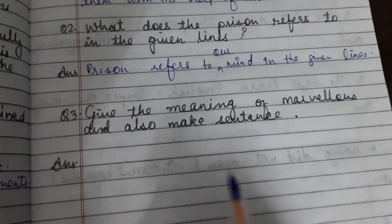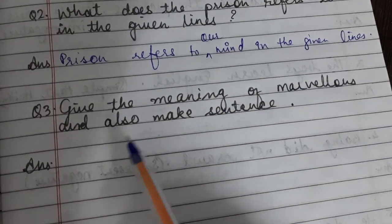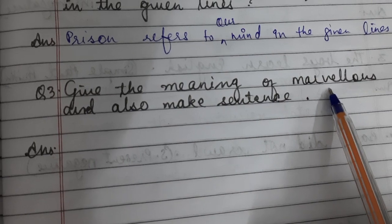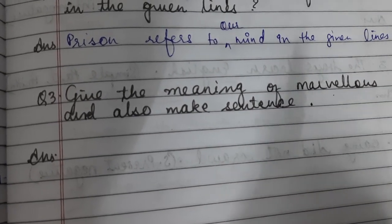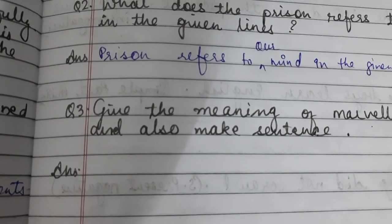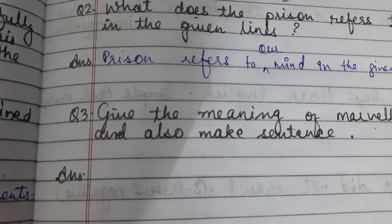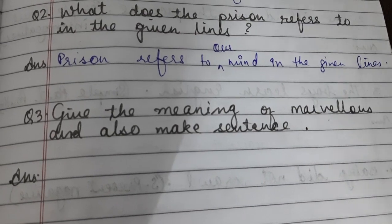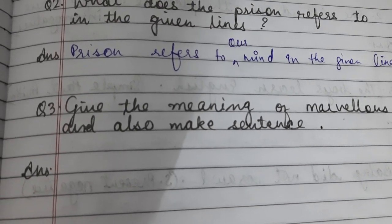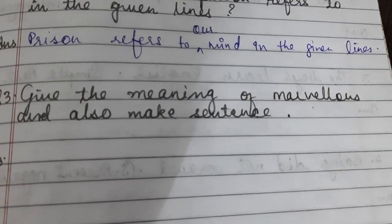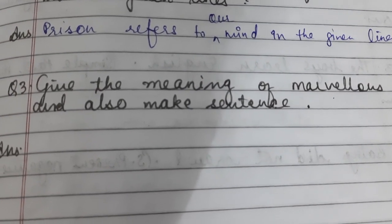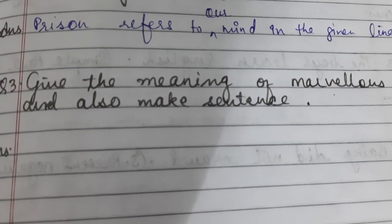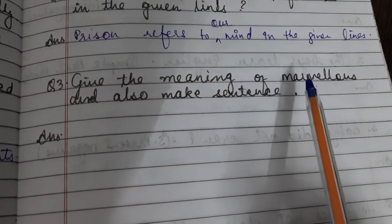Question three: Give the meaning of 'marvelous' and make a sentence. Marvelous means wonderful, amazing, or excellent. Even if this is a word you are hearing for the first time, once you know it means amazing or excellent or wonderful, it becomes easy to make a sentence using it.